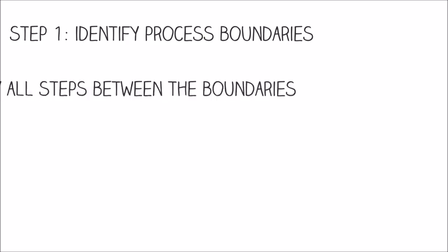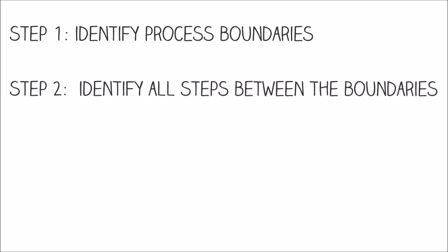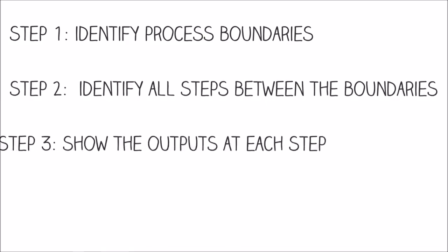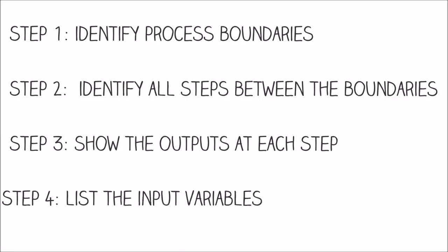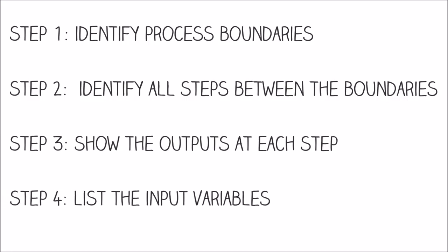Secondly, identify all the steps in the process. Thirdly, show the outputs at each step. And finally, list and classify the input variables. Now, let's discuss each one in a bit more detail using the example of making coffee.